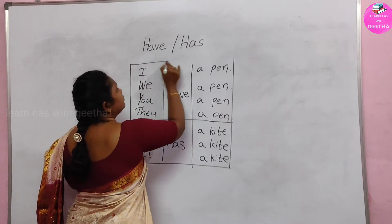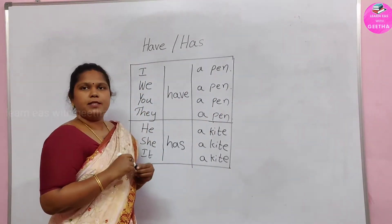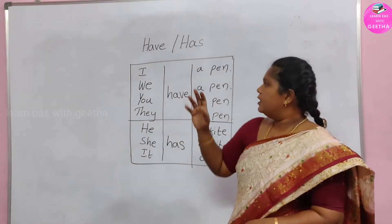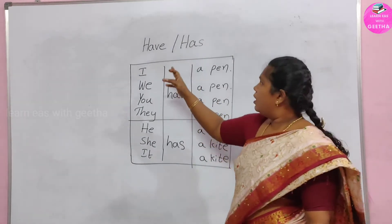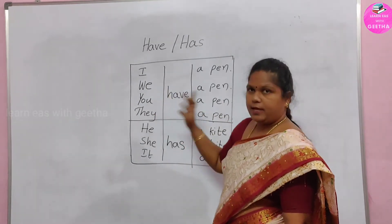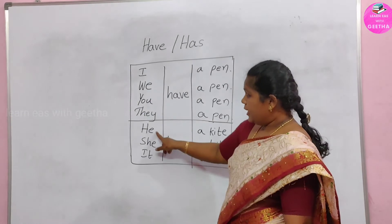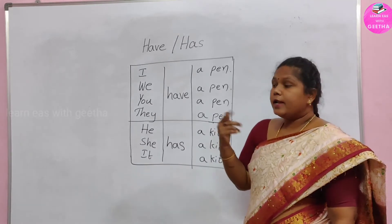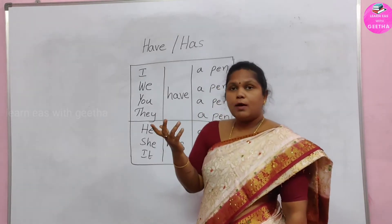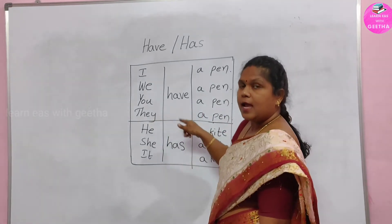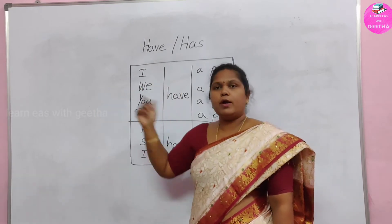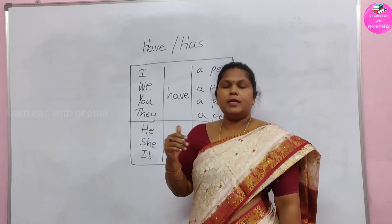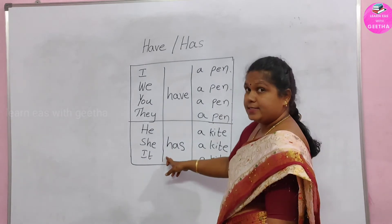This is how it goes — very simple. Look at this table and keep it in mind. Have is used for I, we, you, they. Has is used for he, she, it. Whatever the sentence it might be — he has a toy, she has a toy, it has a tail. I have a toy. It has. She has. He has.